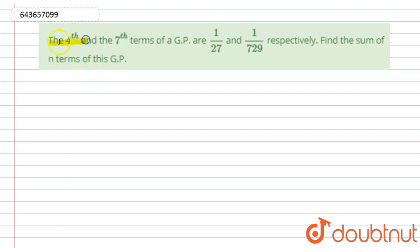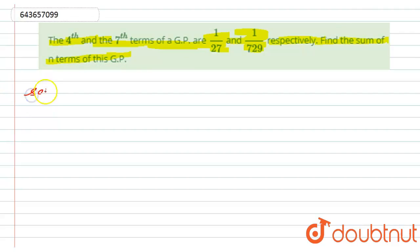Here we have given that the fourth and seventh terms of a GP are 1/27 and 1/729 respectively. Find the sum of n terms of this GP. So let us start with the solution. We have given the fourth term and seventh term of a GP and we have to find the sum of the n terms.